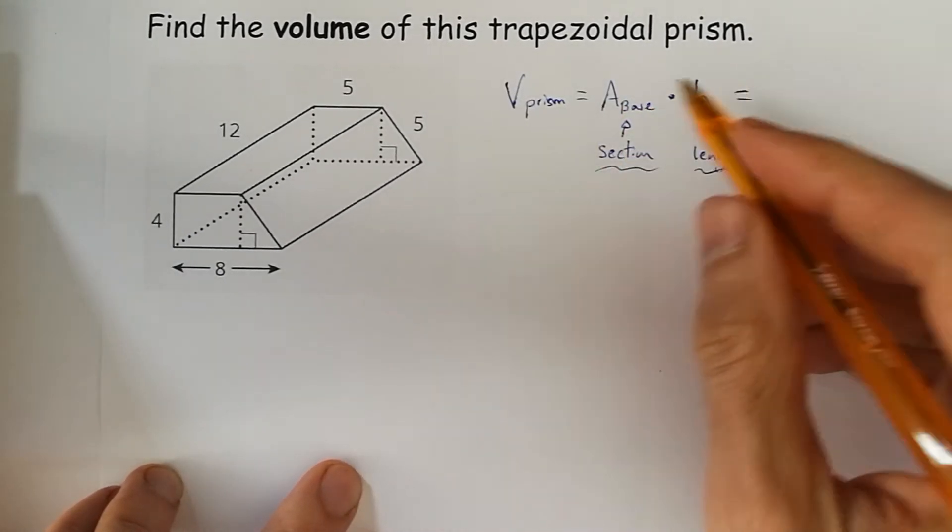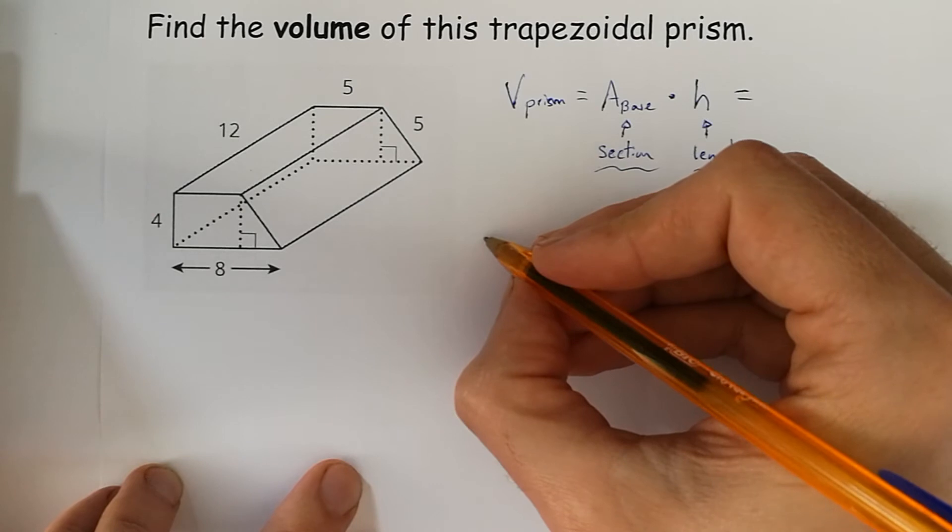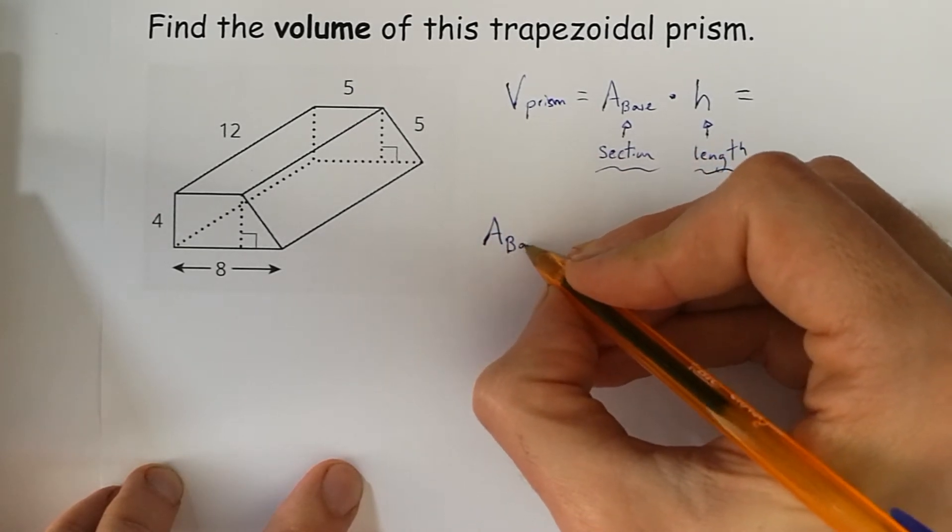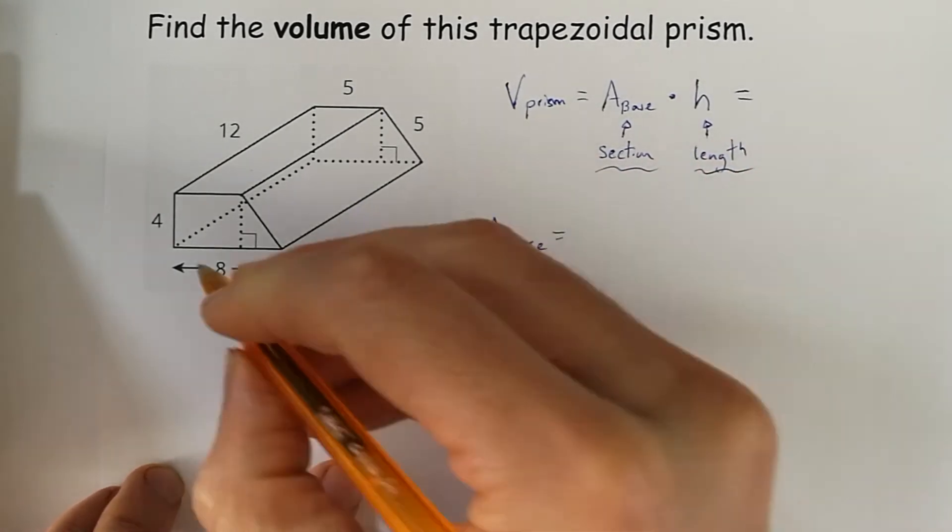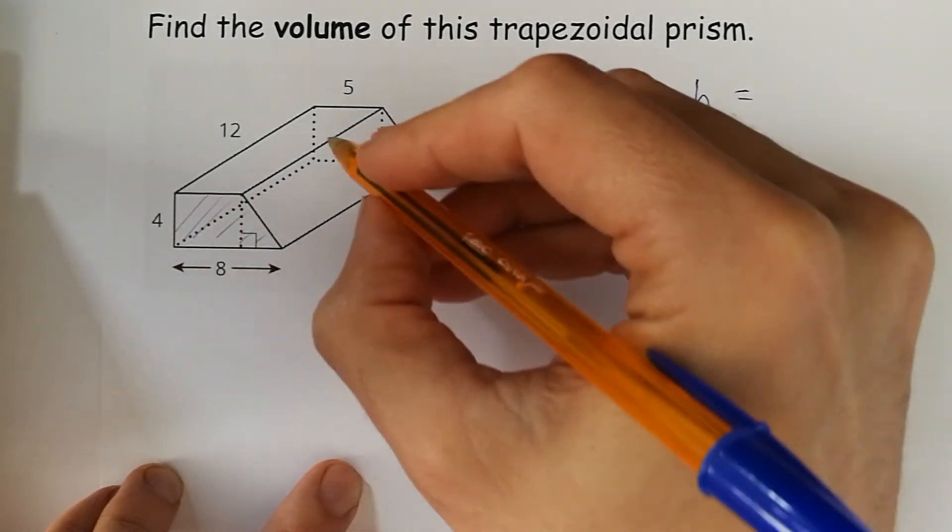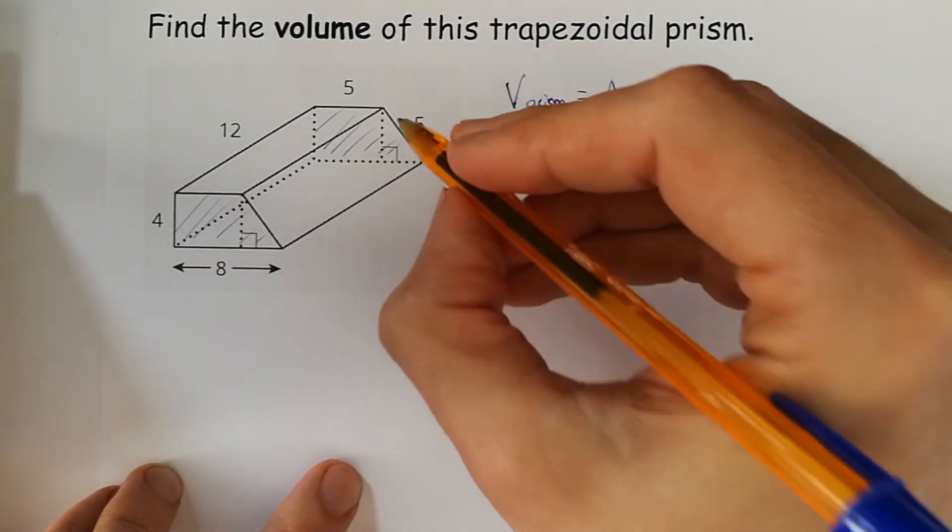So let's find out these two unknowns. The first one, the area of the base—we have to see these are the bases, these are trapeziums,